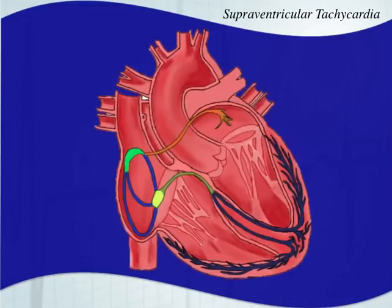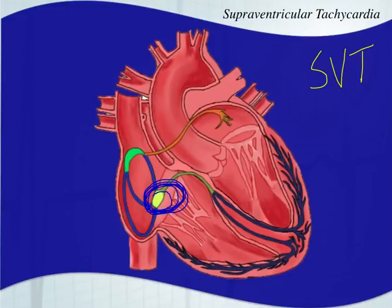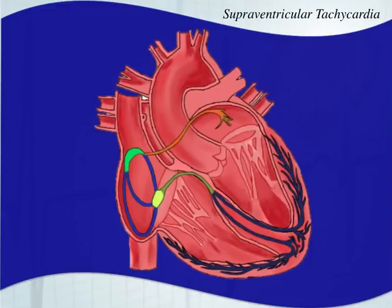Now we're going to talk about supraventricular tachycardia, or SVT. Supraventricular just means above the ventricles, but we're talking about a specific rhythm when we say SVT. Although SVT often originates from a depolarization wave around the AV junction, it's completely different physiologically from a junctional rhythm. At the AV node, you get a re-entry phenomenon where you're constantly depolarizing around and around in a circle, depolarizing the ventricles at a very fast rate.